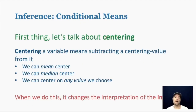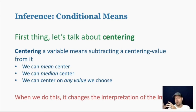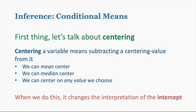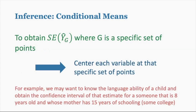The last concept of this lecture is inference about conditional means. To discuss that we first need to talk about centering — subtracting a centering value from the variable. We can pick any value; often the mean is used, making it mean-centered, but we can use the median or any other value. When we do this, it changes the interpretation of the intercept. Centering a variable makes the intercept tell us the average of our outcome when the predictor is at whatever level we set as the centering value.